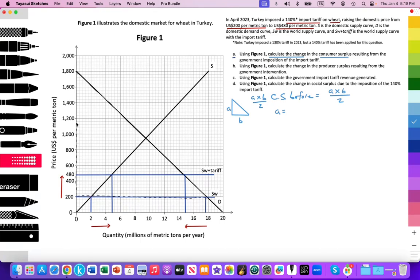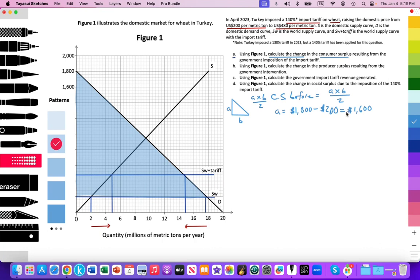Here we clearly see the triangle we're being asked to calculate. The height is 1800 minus 200, which works out to 1600. I'm going to highlight that because I'm going to need that information.